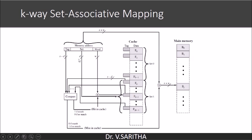The set field bits (d bits) are used to identify the set — set 0, set 1, set 2, and so on. Once the set is identified, all tags in that set are compared with the tag in the given memory address. If the tag matches, the W bits identify the word within that block. If no match occurs, it is a cache miss and the search goes to main memory.